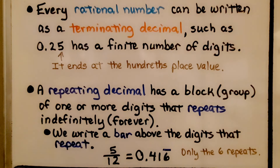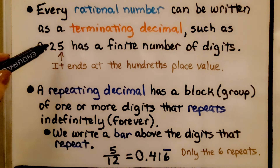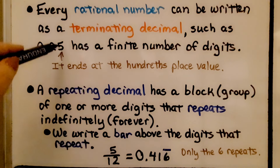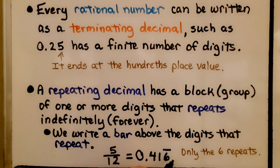Every rational number can be written as a terminating decimal, such as 0.25 — 25 hundredths. This has a finite number of digits; it ends at the hundredths place. A repeating decimal has a block of one or more digits that repeats indefinitely — that means forever. We write a bar above the digits that repeat. For 5 twelfths, it's equal to 0.416 and the 6 keeps repeating, so we write a bar over the top of it to show that the 6 is repeating.